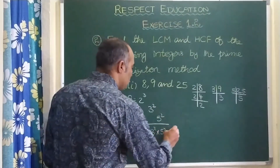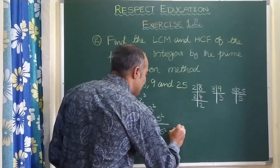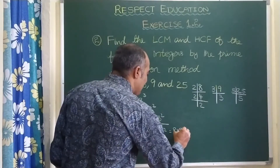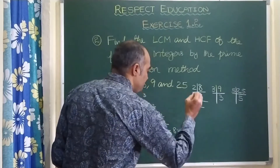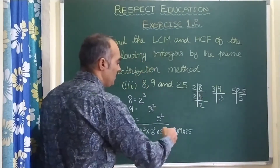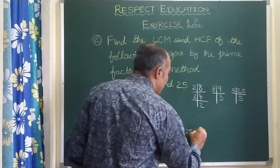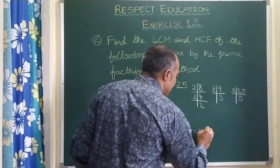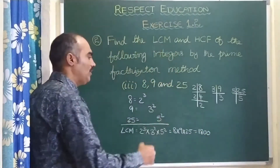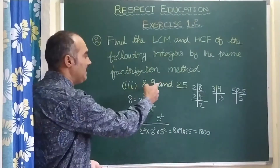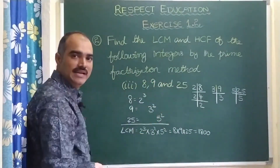So when you multiply, you will get 1,800. So LCM of 8, 9, and 25 is 1,800.